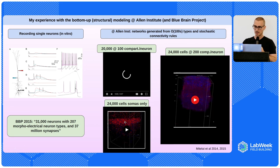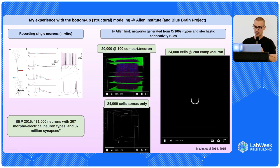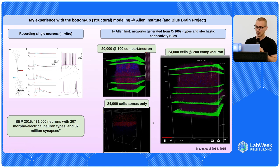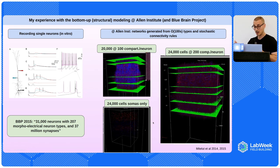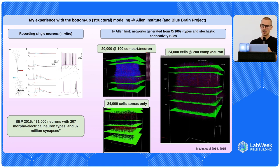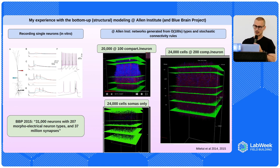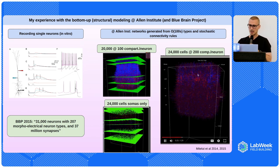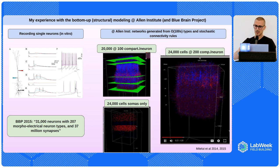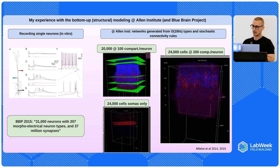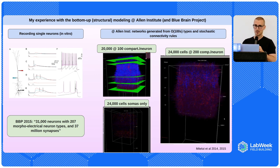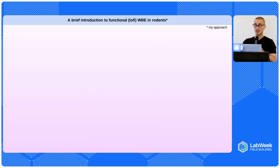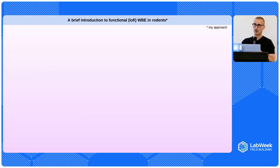I have some videos from my time at the Allen Institute — simulations of about 20,000 cells connected. These are mouse visual cortex neurons, each with about 100 to 200 compartments, connected using stochastic rules. And they can do things, but do they amount to visual cortex? Probably not. The Allen Institute has made great progress in the last decade, but the problem is very far from solved — they were just aiming for the mouse visual cortex, and we're not even close.